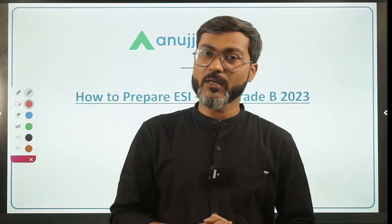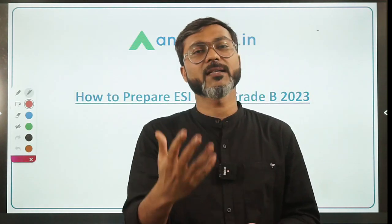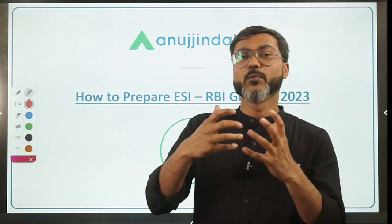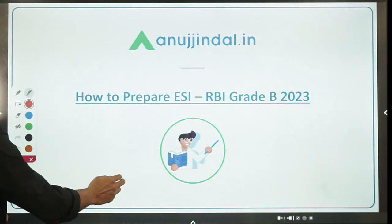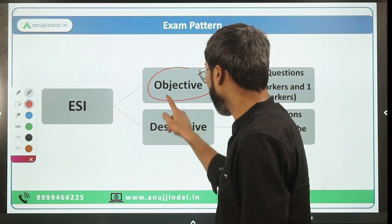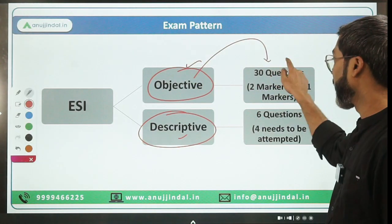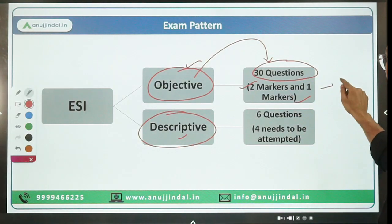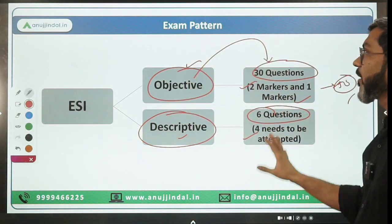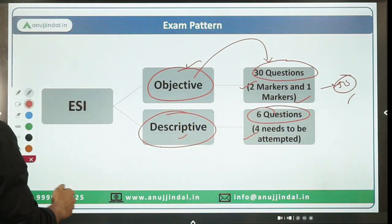So in this video we'll discuss how to maximize your ESI score, what should be the strategy, what to cover, and what the sources are. Let's begin without any delay. First, let me tell you the pattern of the ESI paper. There are two types of questions: objective and descriptive. In objective, there are 30 questions - two markers and one markers - totaling 50 marks. In descriptive, there are six questions out of which you have to attempt four.